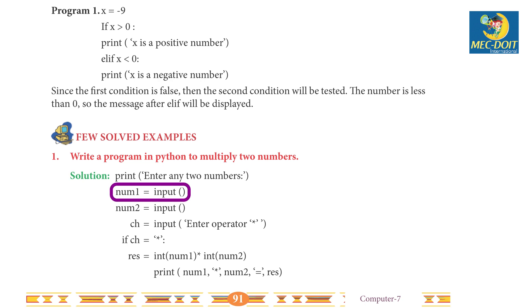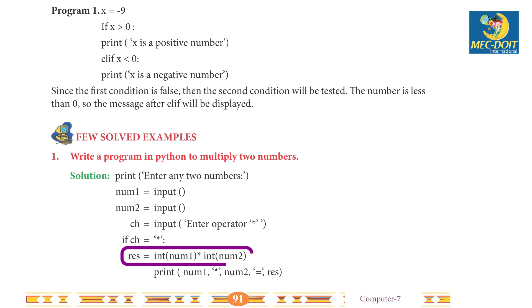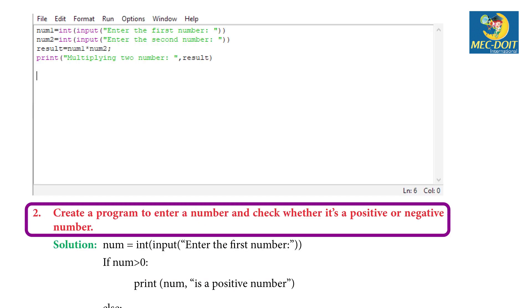Solved example 1: write a program in Python to multiply two numbers. Solution: print('Enter any two numbers'); number1 = input(); number2 = input(); ch = input('Enter operator: *'). If ch == '*': res = int(number1) * int(number2); print(number1, '*', number2, '=', res).